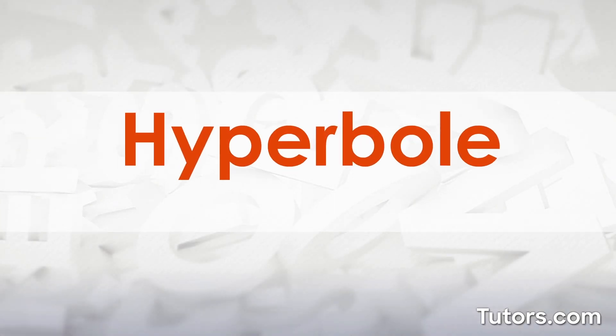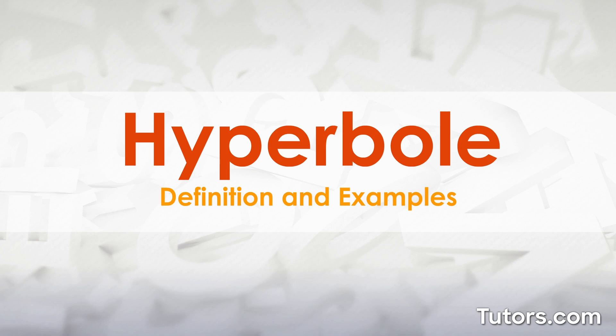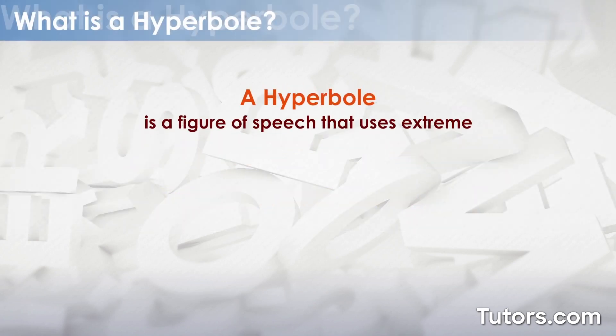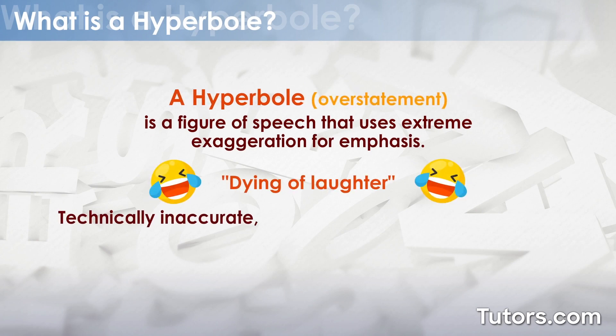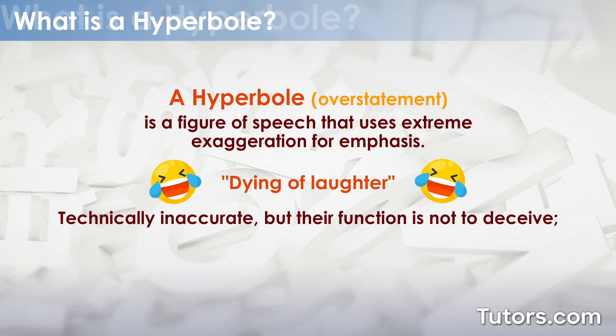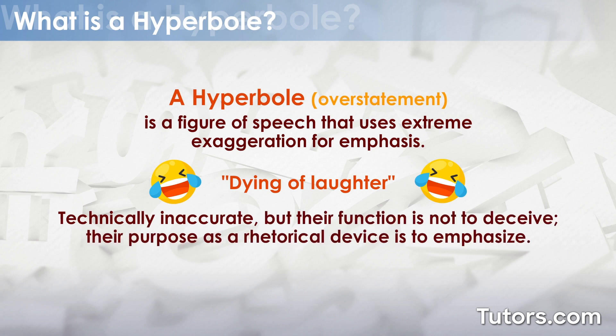What is a hyperbole? A hyperbole is a figure of speech that uses extreme exaggeration for emphasis. Also called an overstatement, hyperboles are technically inaccurate, but their function is not to deceive. Instead, their purpose as a rhetorical device is to emphasize.